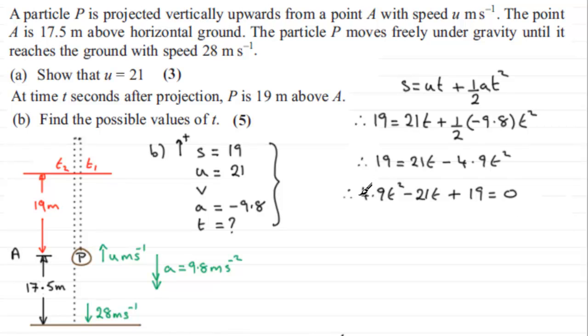So A is 4.9, B is minus 21, and C is the 19. So we therefore have T equals minus B, so that's minus minus 21, so that's 21, plus or minus the square root of B squared, so that's minus 21.